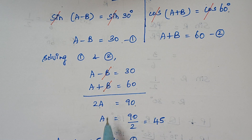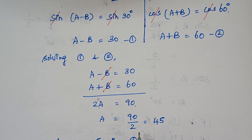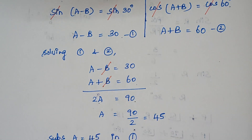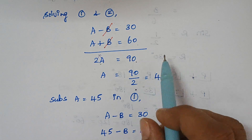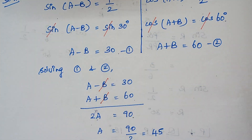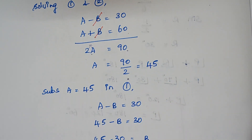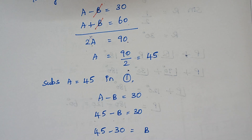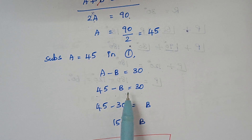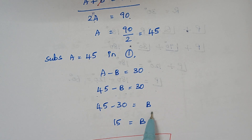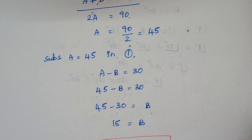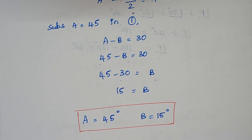Since 2A = 90, dividing both sides by 2 gives A = 45 degrees. Substituting A = 45 into equation 1: 45 − B = 30. Rearranging: B = 45 − 30 = 15 degrees. Therefore A = 45° and B = 15°.